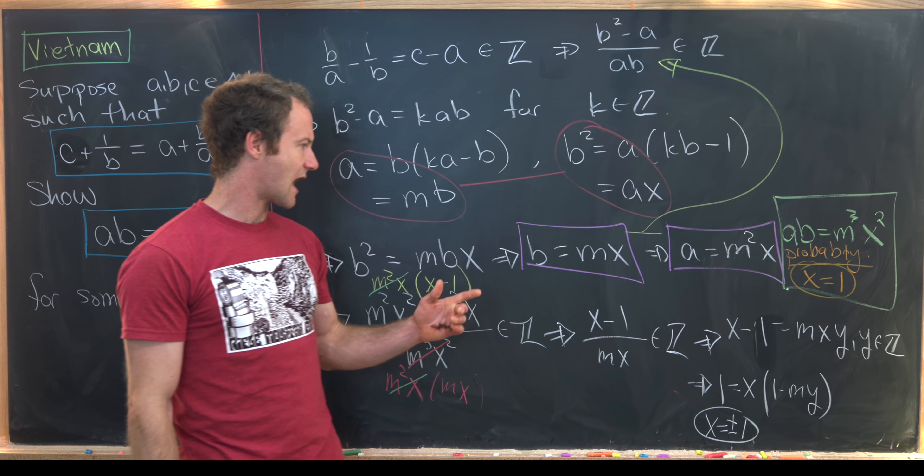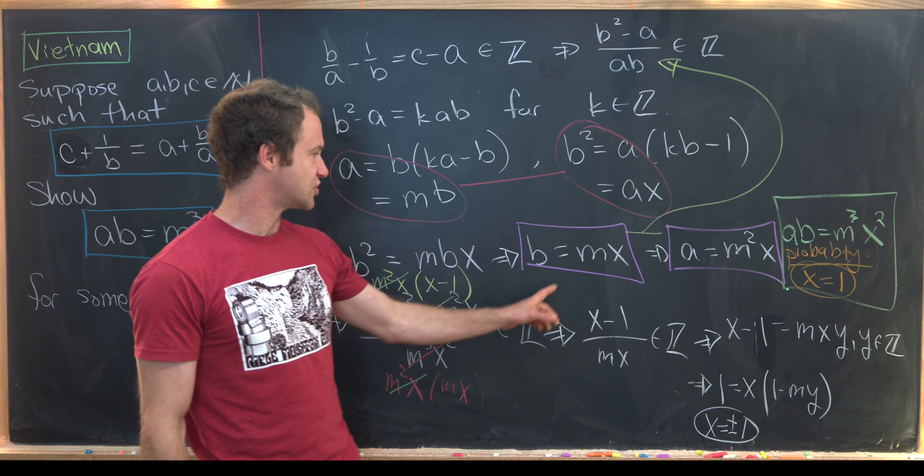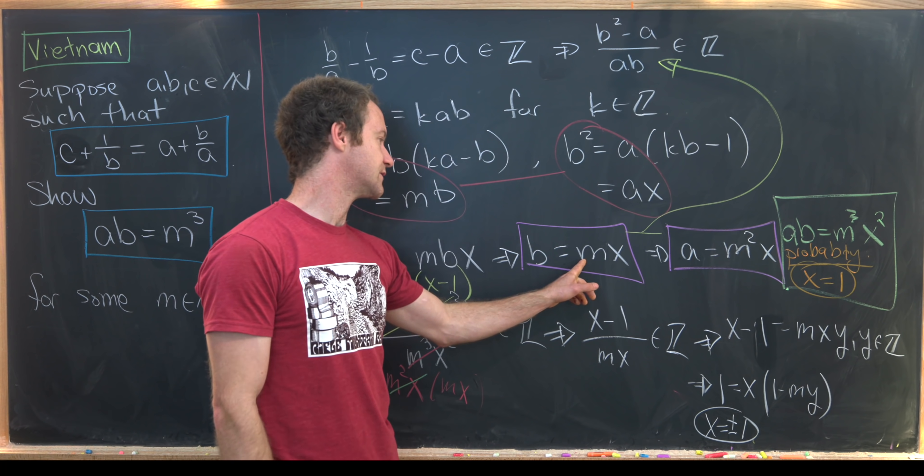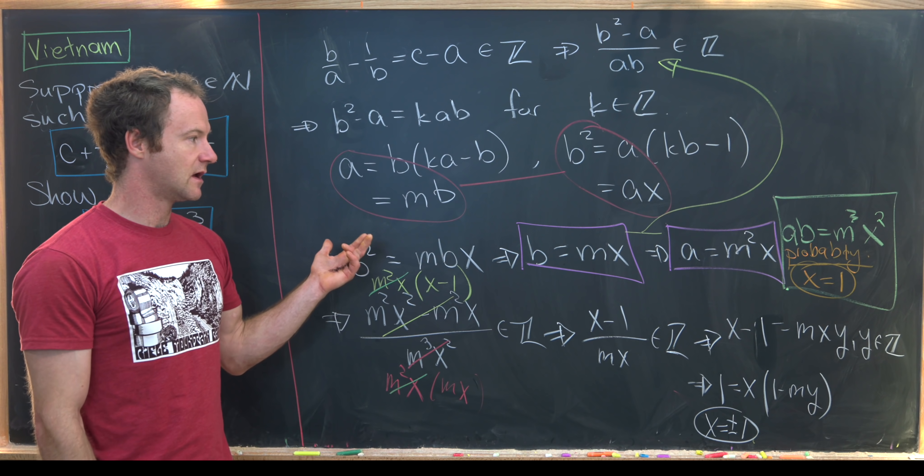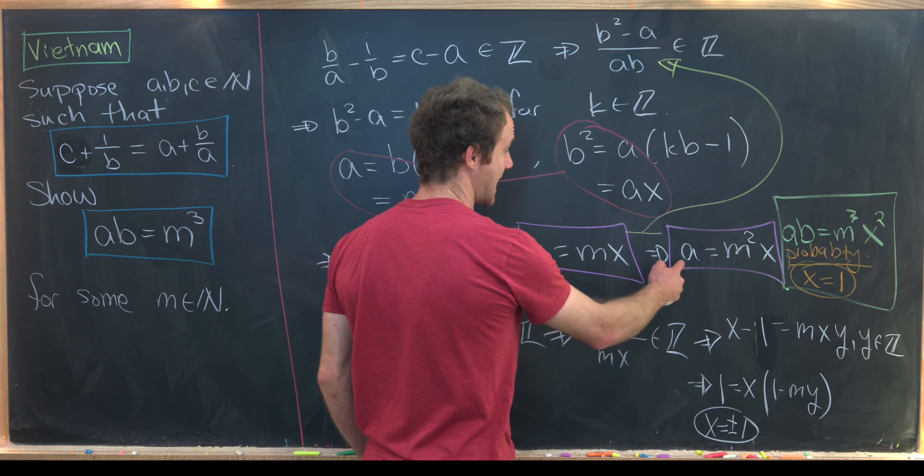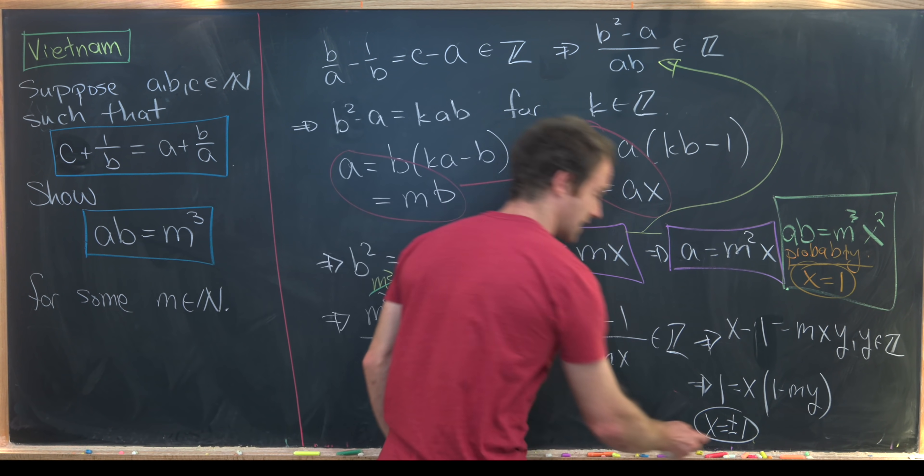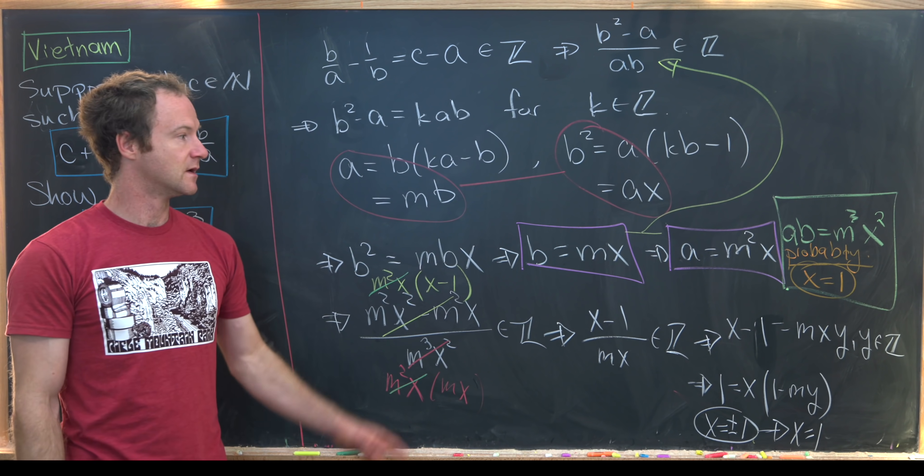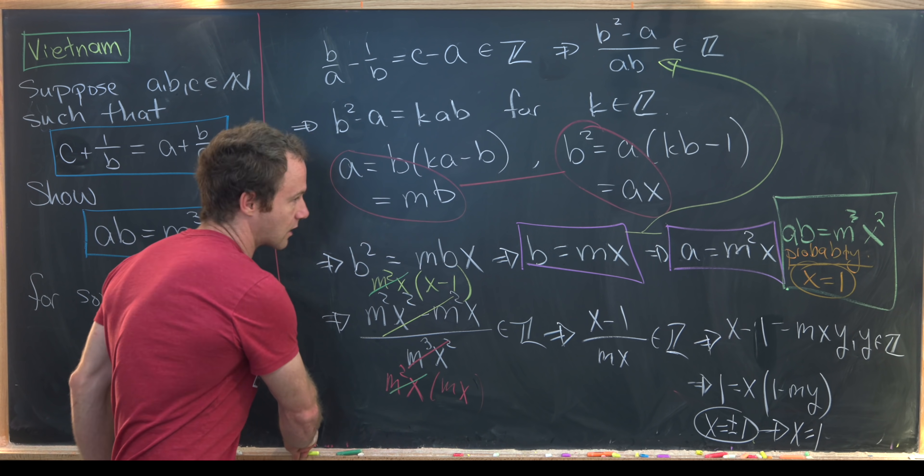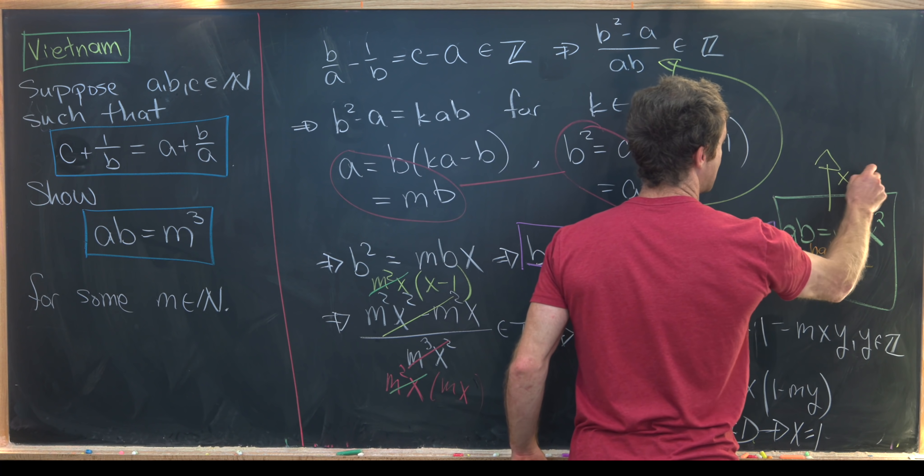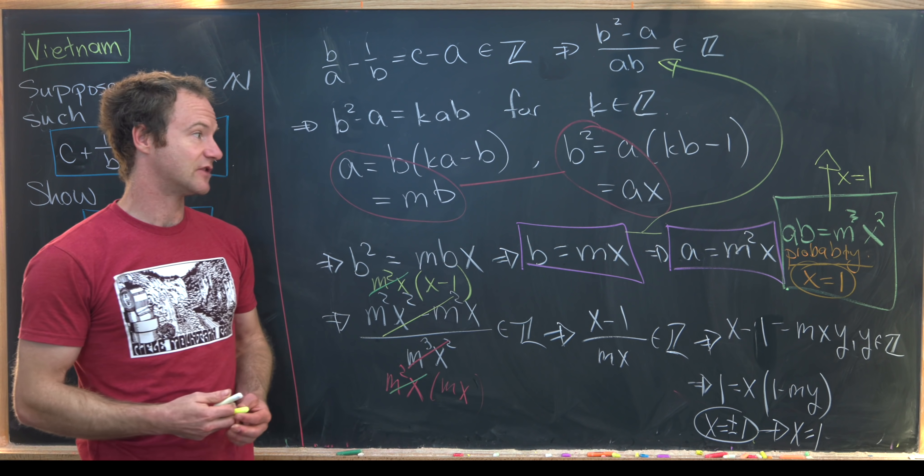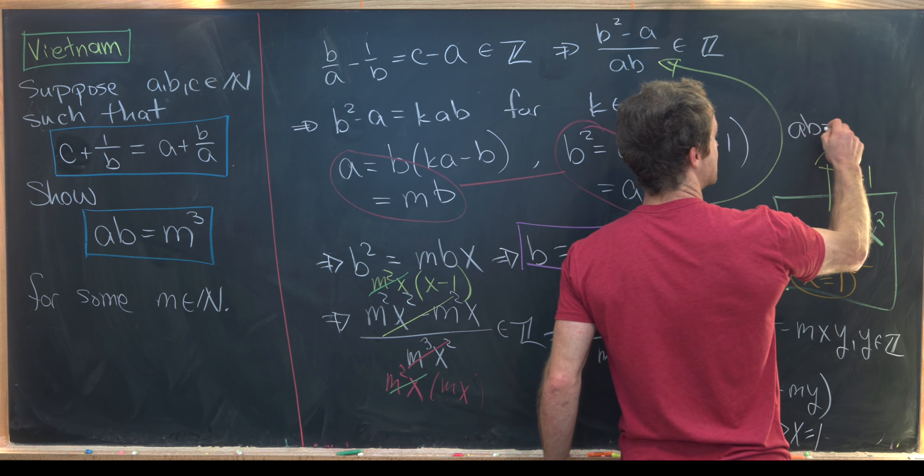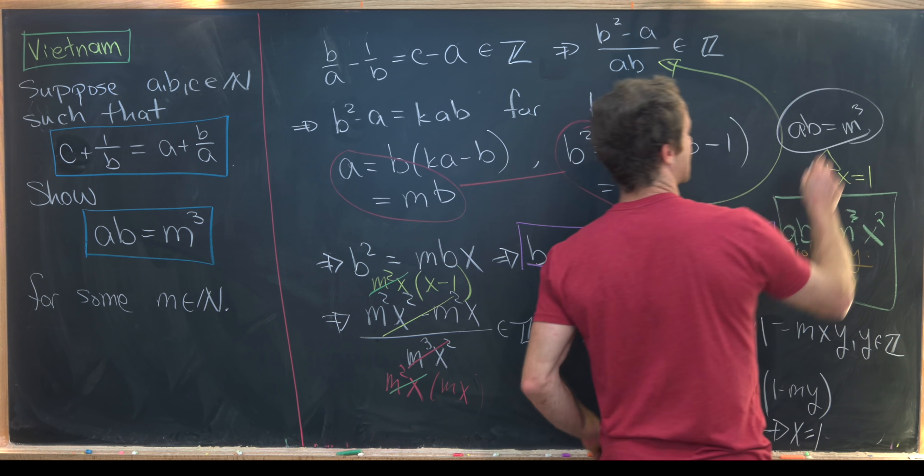But again, from our original observation up here, where B is equal to MX, A is equal to M squared X, we see that X must be positive because A is positive and B is positive. So that means we have X is actually equal to 1. But now we can go back to our green thing right here and just plug in the thing which was probably true, which is now definitely true. And we see that AB is equal to M cubed as needed.